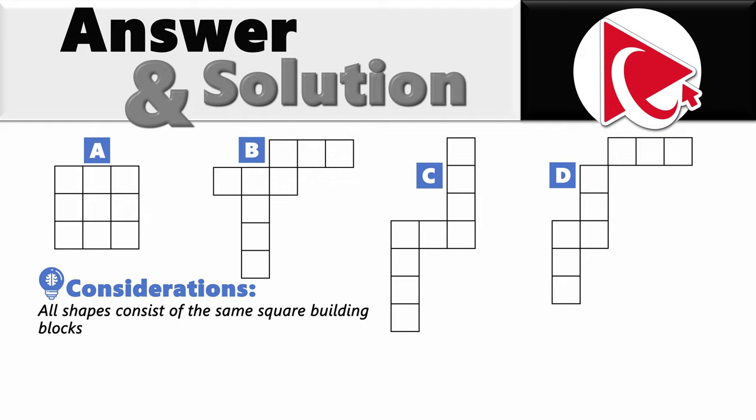But shape D is different. Counting the boundary: 1, 2, 3, 4, 5, 6, 7, 8, 9, 10, 11, 12, 13, 14, 15, 16, 17, 20, 21, and 22. Shape D's perimeter is the longest with 22 units. So the correct answer is choice D.